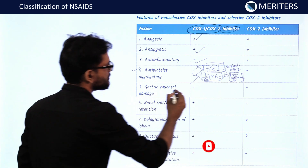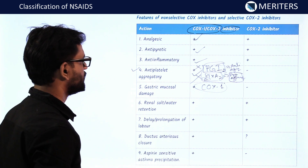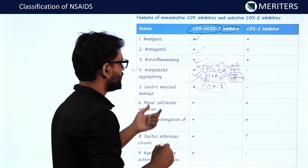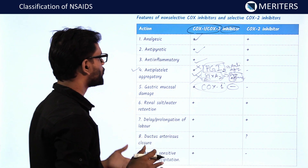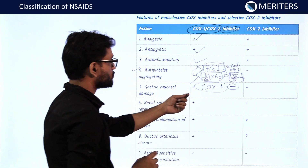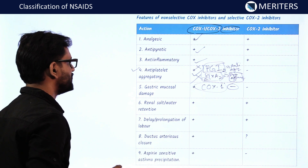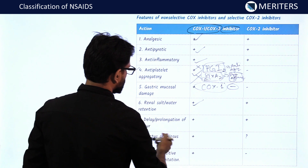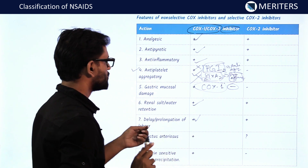Gastric mucosal damage is due to COX-1 inhibition — that's why preferential and selective COX-2 inhibitors were developed. Inhibiting COX-1 decreases mucoprotective factors, causing gastric mucosal damage. COX-1 inhibitors are thus responsible for the GIT side effects of NSAIDs. We also see renal salt and water retention, and prolongation of labor.